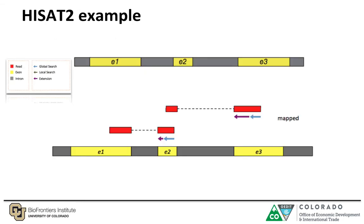As an example, we have two reads here that are spliced across two different exons. The first initial step would be to use a global index and anchor the read, represented by the blue arrow. The second step would then use the local index to determine where your read is spliced, shown with the green arrow. It is this two-step global indexing and local indexing that allows HISAT2 to be a fast aligner compared to other aligners such as TopHat2.